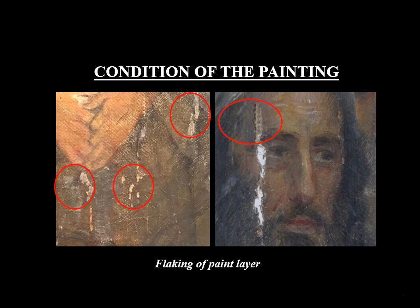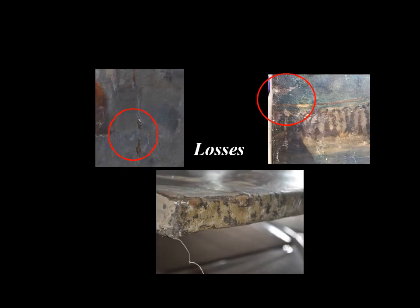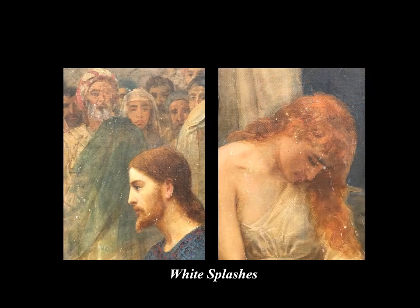Now focusing on the condition of the painting: the uncontrolled environmental parameters such as temperature and relative humidity affected the binding medium, leading to ageing. This inadequate loss of binding medium between the inert layer and the support caused flaking of the paint layer. Losses were visible at various areas, specifically at all four edges of the painting. White splashes on the paint layer were also visible, embedded in the paint layer and introducing white translucent stains all over the painting.